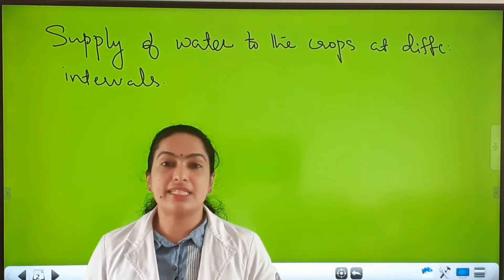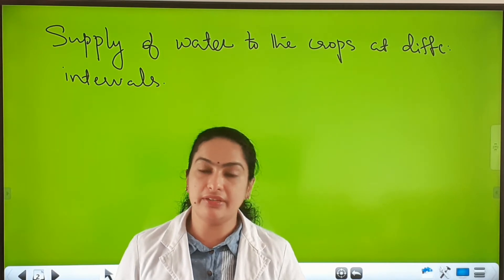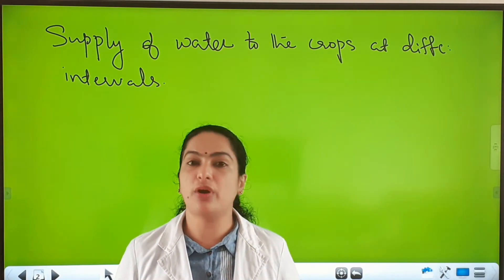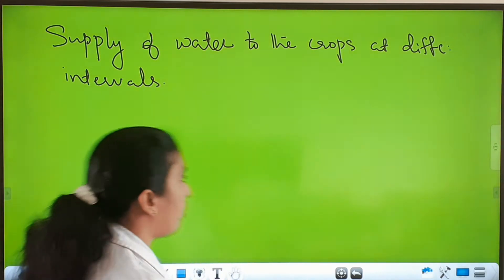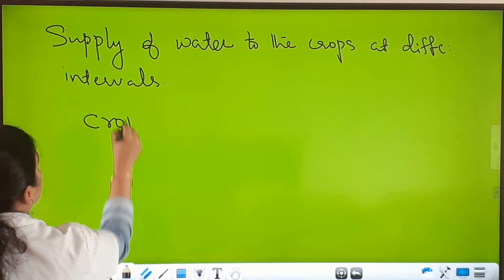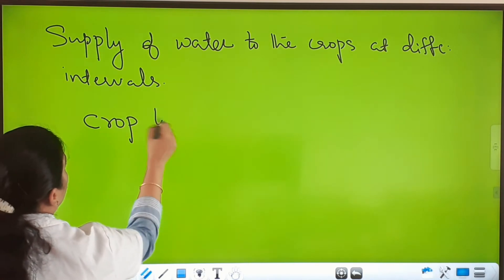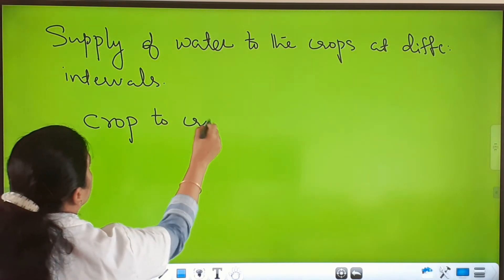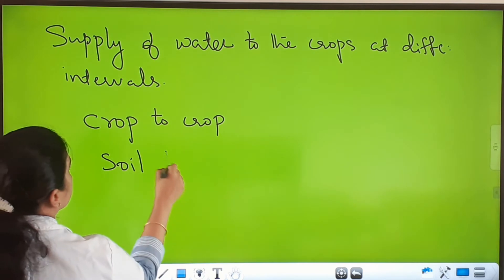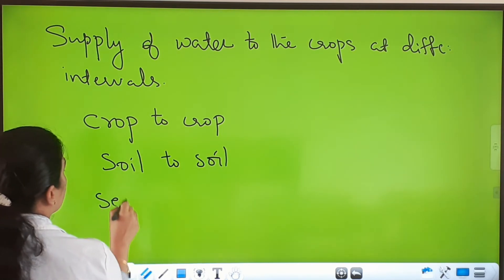The time and frequency of irrigation, or supply of water, depends on crops — it varies from crop to crop, soil to soil, and season to season.